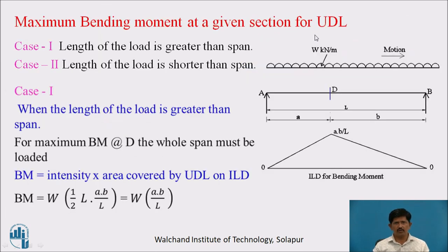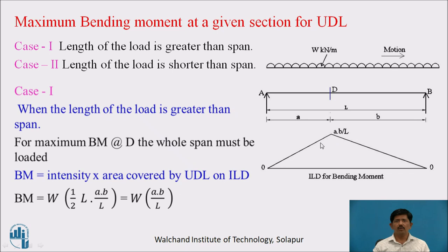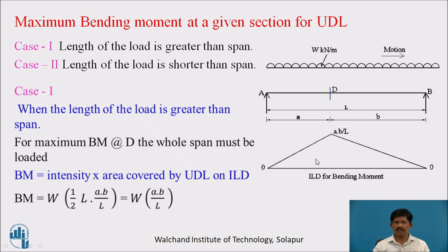For uniformly distributed loading, there are two cases. Case 1: when the UDL length is greater than the span, the whole span must be loaded for maximum bending moment at D. The bending moment equals the intensity of load multiplied by the area covered by the UDL on the ILD, which is a triangle: BM = W × (½ × base × height) = W × AB/L.